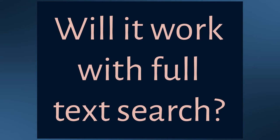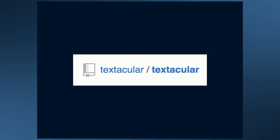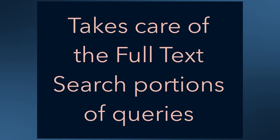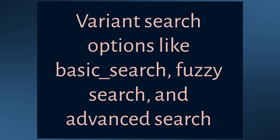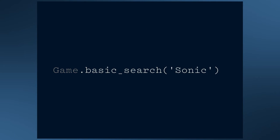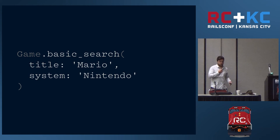Will this work with full-text search? Luckily, yes. Let's talk about our first gem: Textacular. Textacular was originally written by Aaron Patterson and lives on GitHub. It takes care of the full-text search portions of the queries and assumes you want to search over every text field. It gives you search options like basic search, fuzzy search, and advanced search. For our purposes, all we really care about is basic search — most generally useful when building a single field input. So if you're searching for a game that includes Sonic, or you want any Mario title on any Nintendo platform, you can specify those fields.